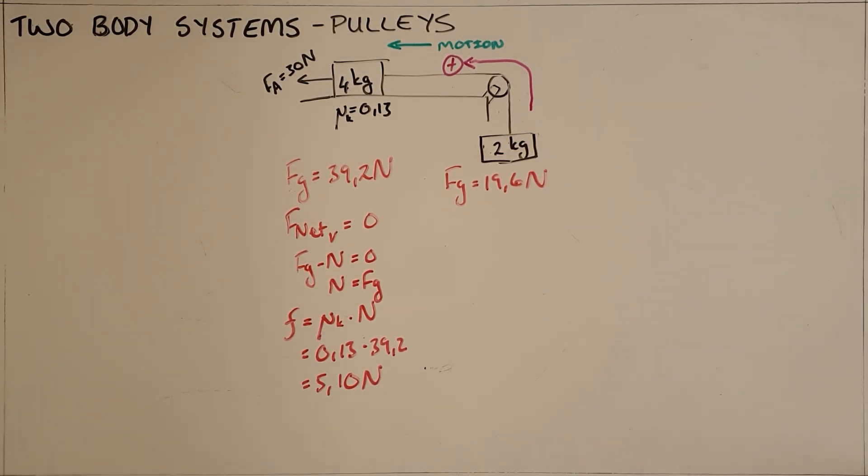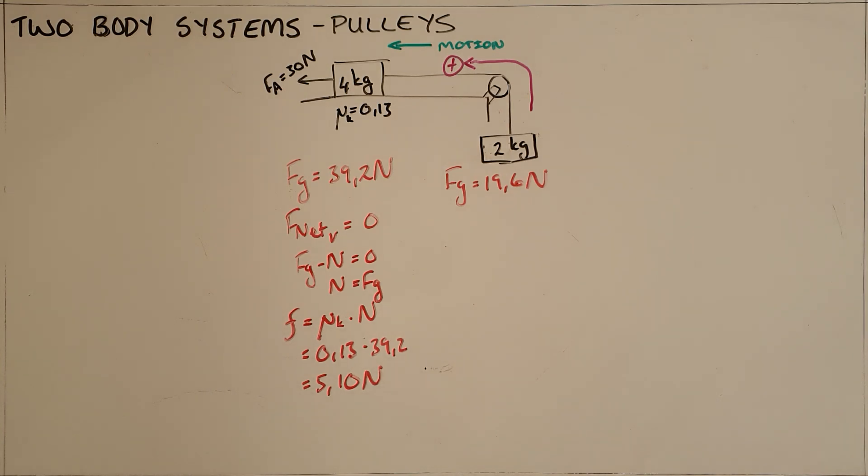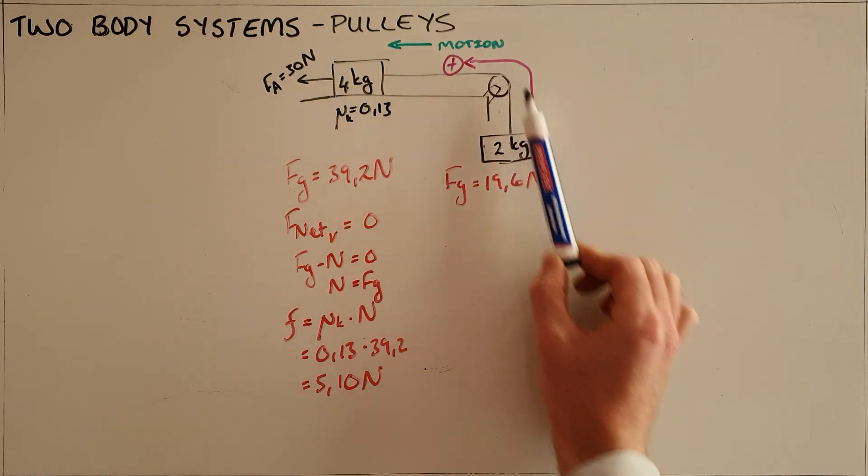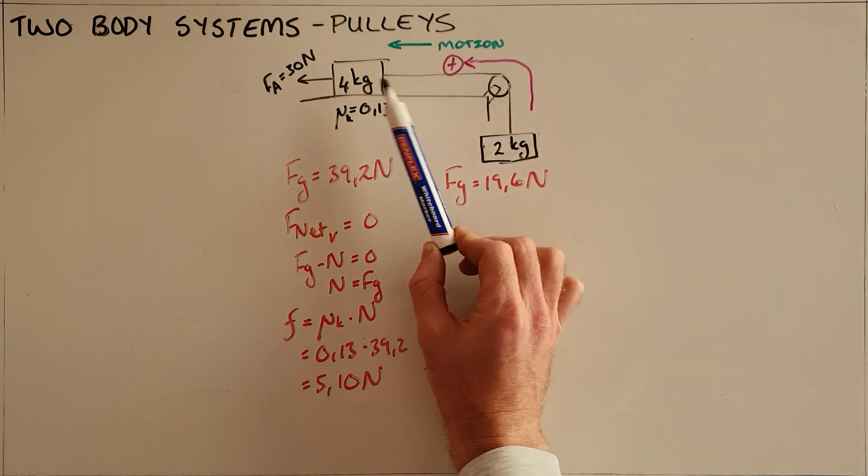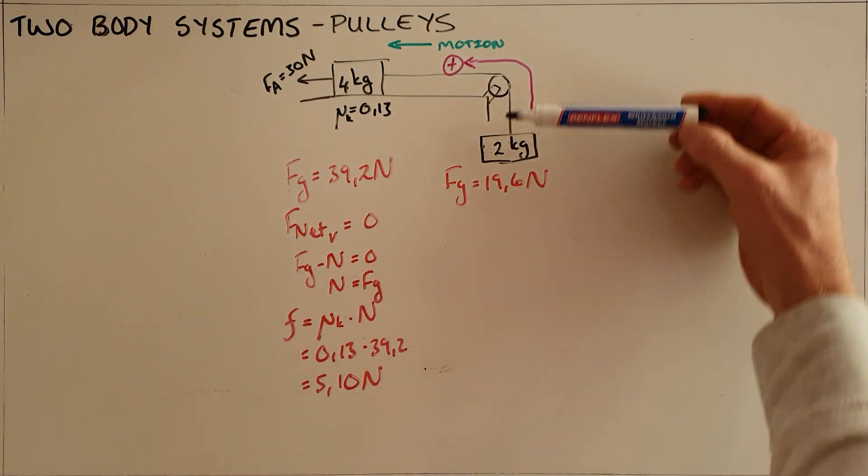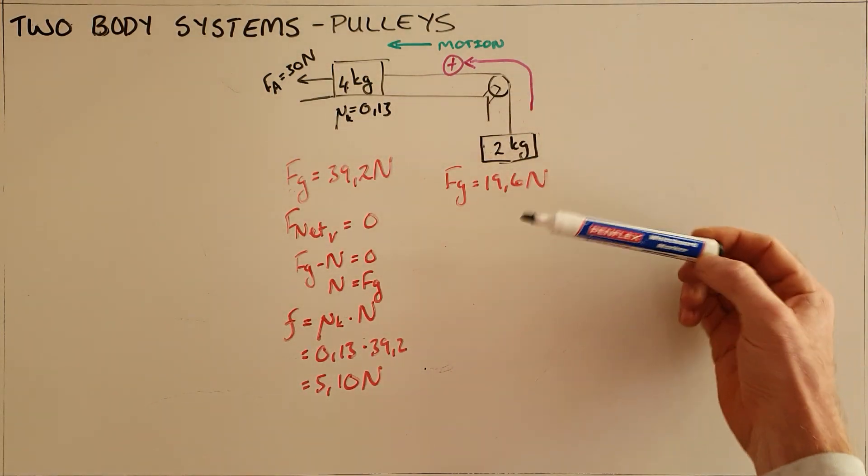An extension of the horizontal two-body system is one where a pulley is used. The pulley essentially changes the direction of the rope, so we have one object that can move in a horizontal plane and a second object that can move in the vertical plane.